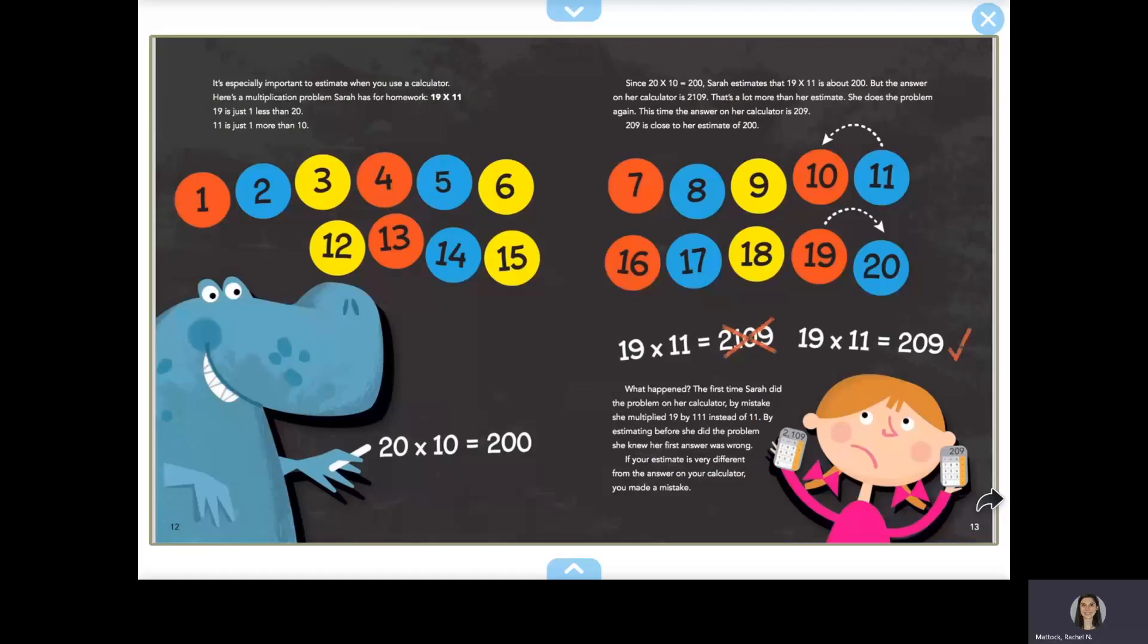But the answer on her calculator is 2,109. That's a lot more than her estimate. She does the problem again. This time, the answer on her calculator is 209. 209 is close to her estimate of 200.